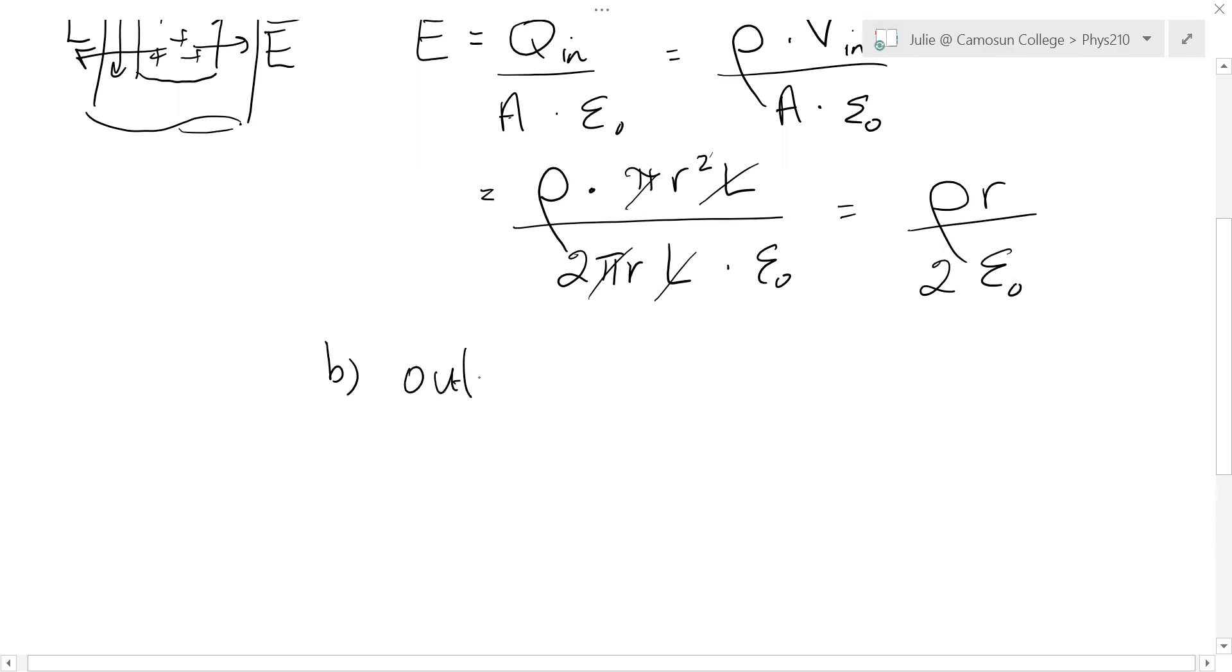Case B we'll do outside. This would be for little r greater than R. So in this case now we have our charged cylinder, infinitely long. Our Gaussian surface is now going to be out here of length L and radius little r. Now little r is greater than capital R. So inside here is the capital R.